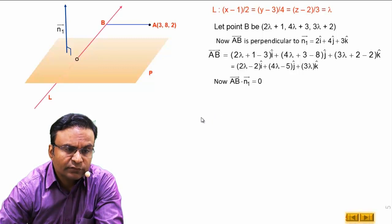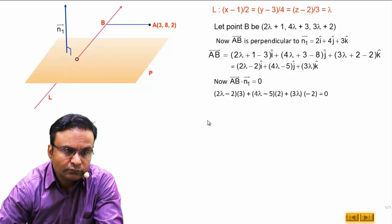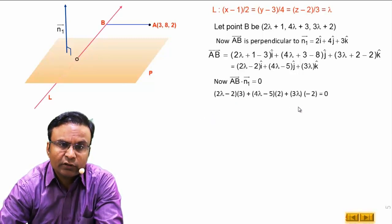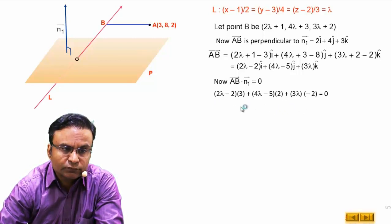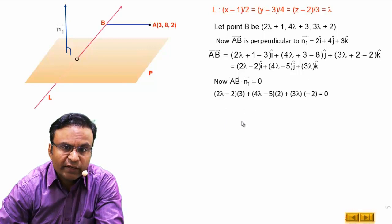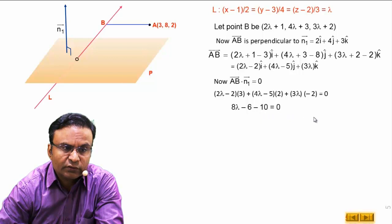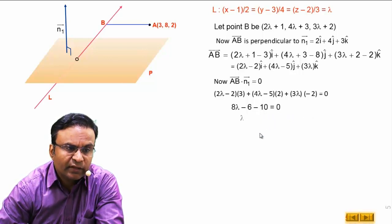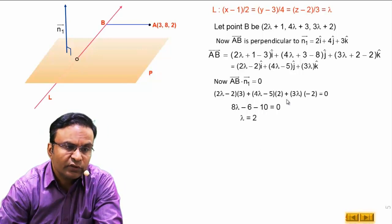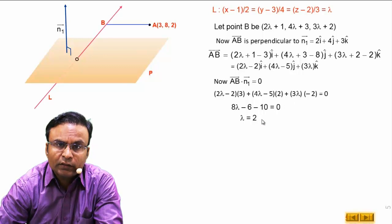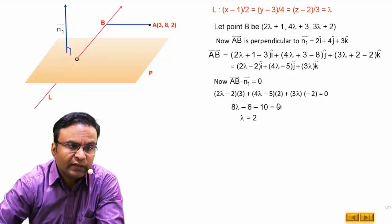Let us calculate lambda from this. We have this dot product is equal to 0. We have 8 lambda minus 6 minus 10 is equal to 0. That means lambda is equal to 2. By solving this equation, we got the value of lambda.